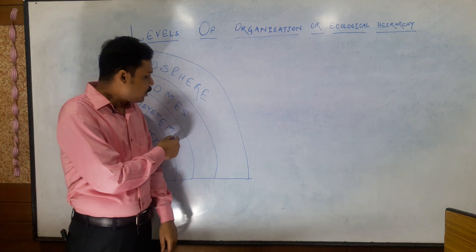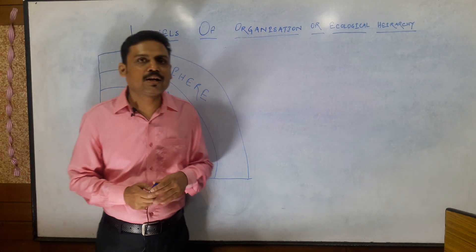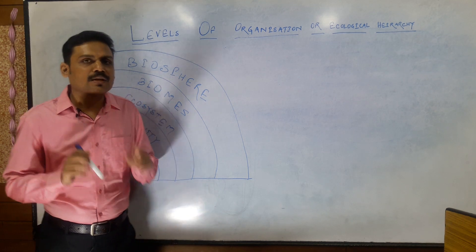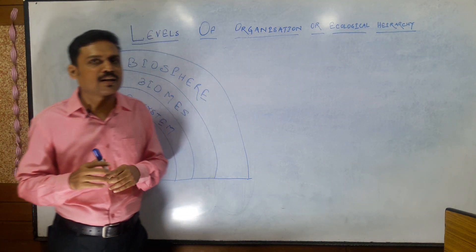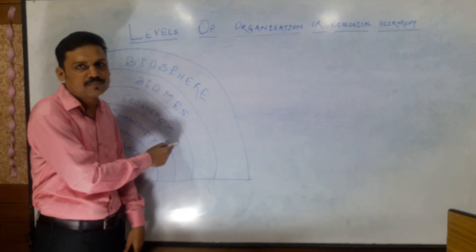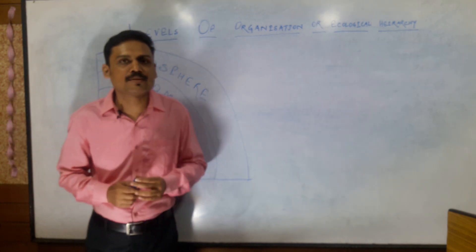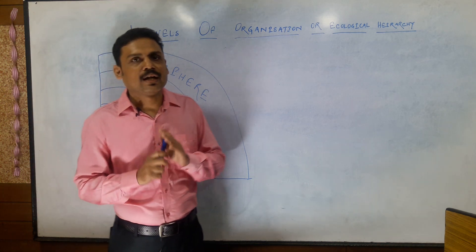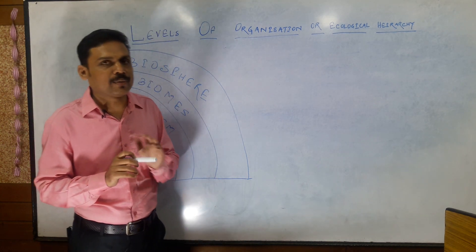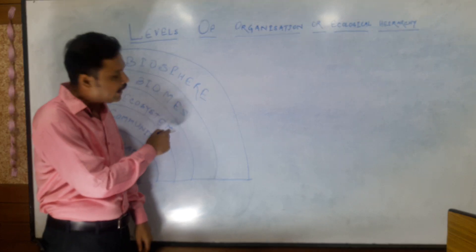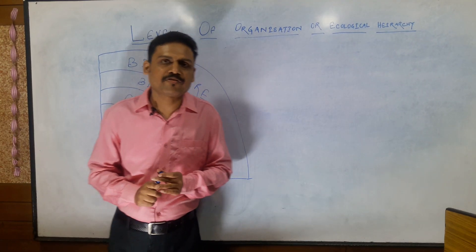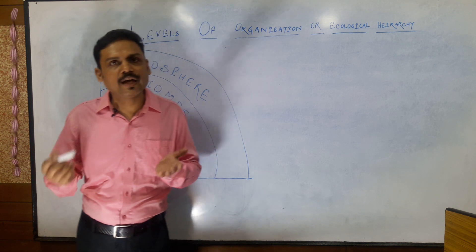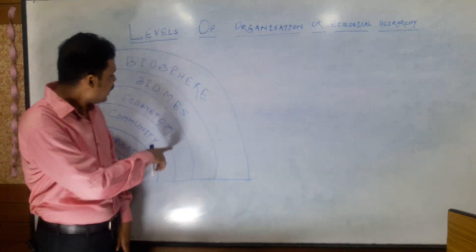The next level is the ecosystem. When a community of organisms is taken together with their outer or physical environment, it forms the ecosystem. When the community of living organisms is combined with the outer world — like air, water, or wind — it forms the ecosystem. Inside an ecosystem there are two major factors: the living or biotic components, and the non-living components like air, water, and soil.